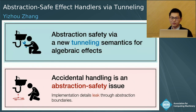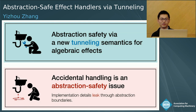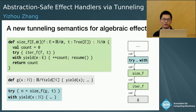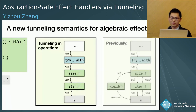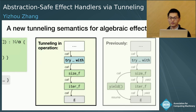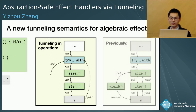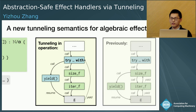To fix this problem, we give a new semantics — a tunneling semantics for algebraic effects. Tunneling does not require any changes to the program. With the tunneling semantics in operation, when G yields, the effect is immediately tunneled to the handler in the client code instead of being intercepted by some intermediary context.